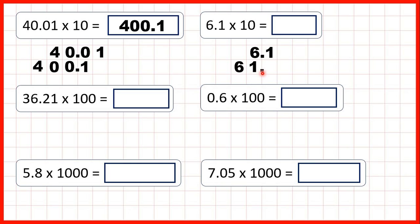If we have a decimal point on the end of our number, we have a whole number, so 6.1 times 10 is 61. That makes sense because 6 times 10 is 60, and 1 tenth times 10 is 1 — if we have 1 tenth and multiply it by 10, we have 10 tenths, and 10 tenths is the same as 1 whole.